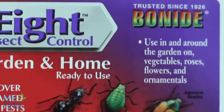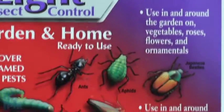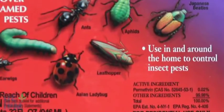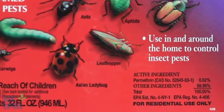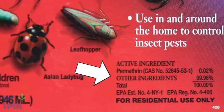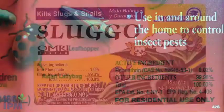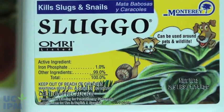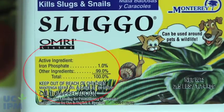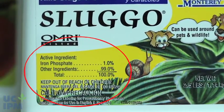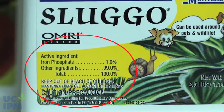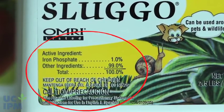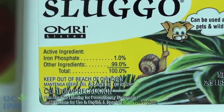To find this out, you need to look lower down on the label under the small type that says 'active ingredients.' The active ingredient is the toxic chemical that usually kills or controls the pest. It usually only makes up a small percentage of the product, but it is the most toxic part.